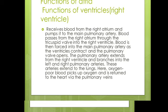Blood passes from the right atrium to the right ventricle, where pressure is built up. When the ventricles contract, the pulmonary artery opens and blood flows into it, branching into the right and left pulmonary arteries, which supply the lungs.